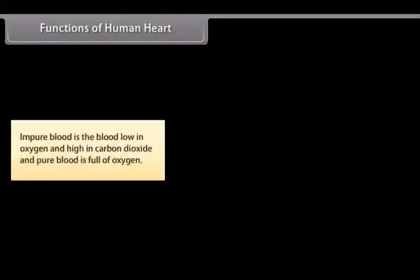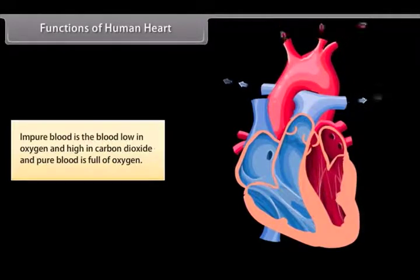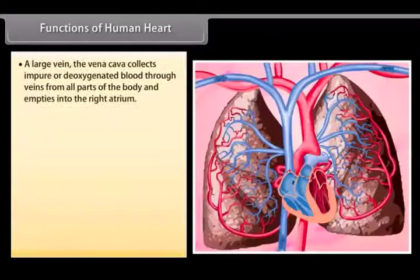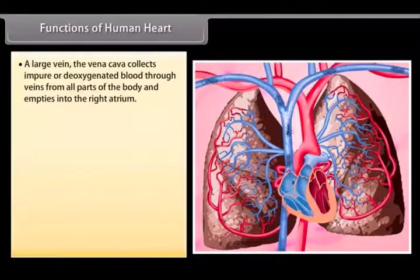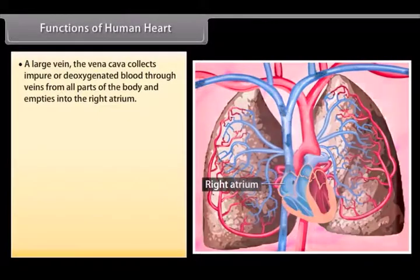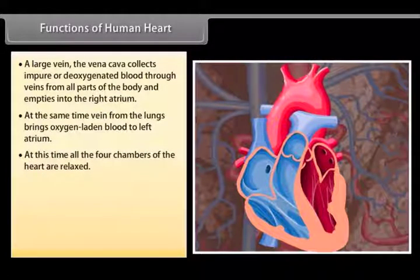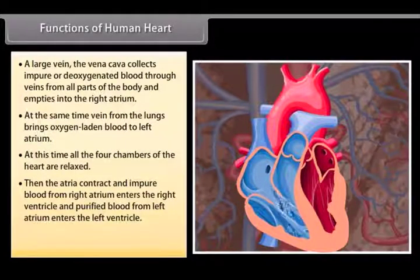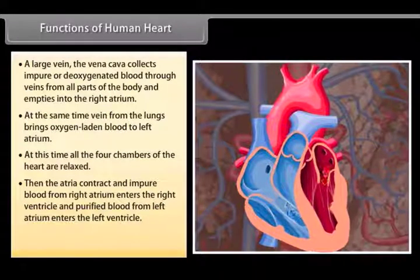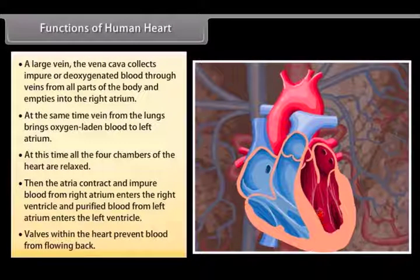Functions of human heart. Impure blood is the blood low in oxygen and high in carbon dioxide, and pure blood is full of oxygen. A large vein, the vena cava, collects impure and deoxygenated blood through veins from all parts of the body and empties into the right atrium. At the same time, vein from the lungs brings oxygen laden blood to left atrium. At this time, all the four chambers of the heart are relaxed. Then, the atria contract and impure blood from right atrium enters the right ventricle and purified blood from left atrium enters the left ventricle. Valves within the heart prevent blood from flowing back.